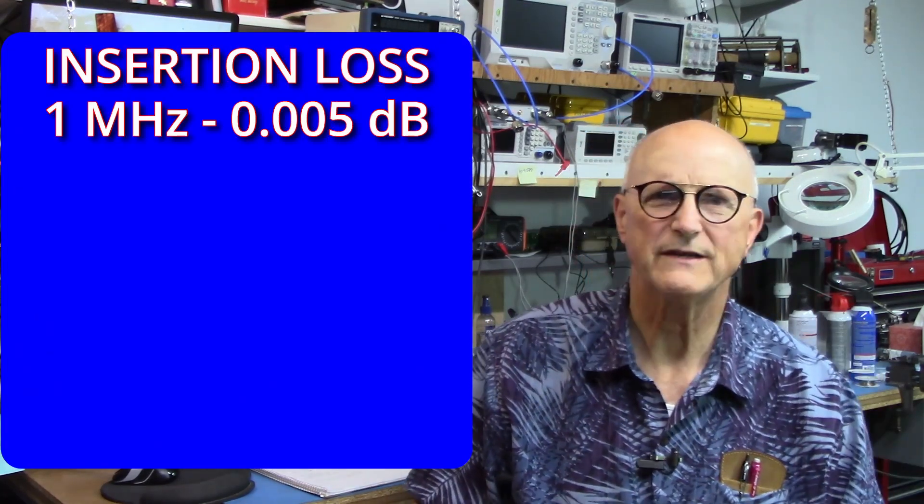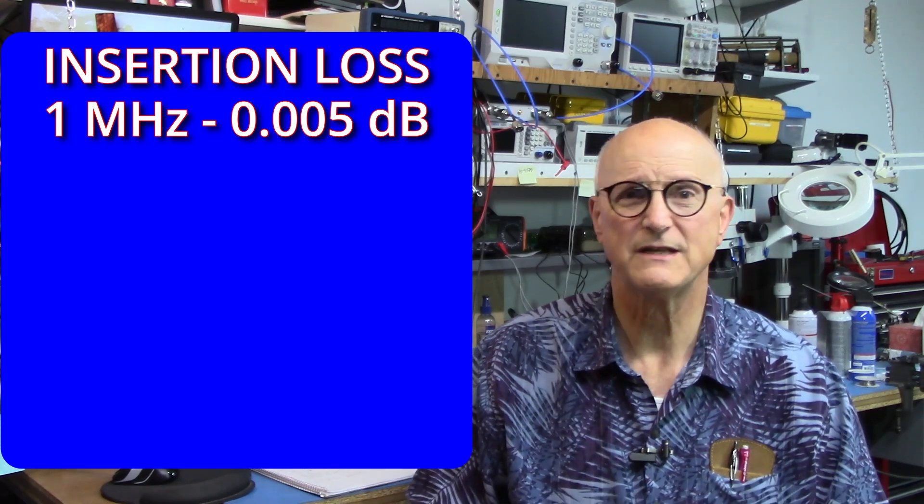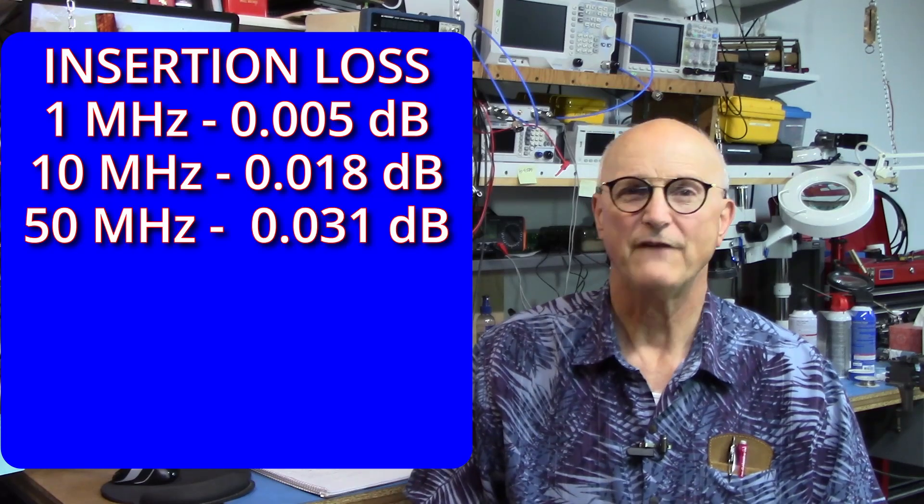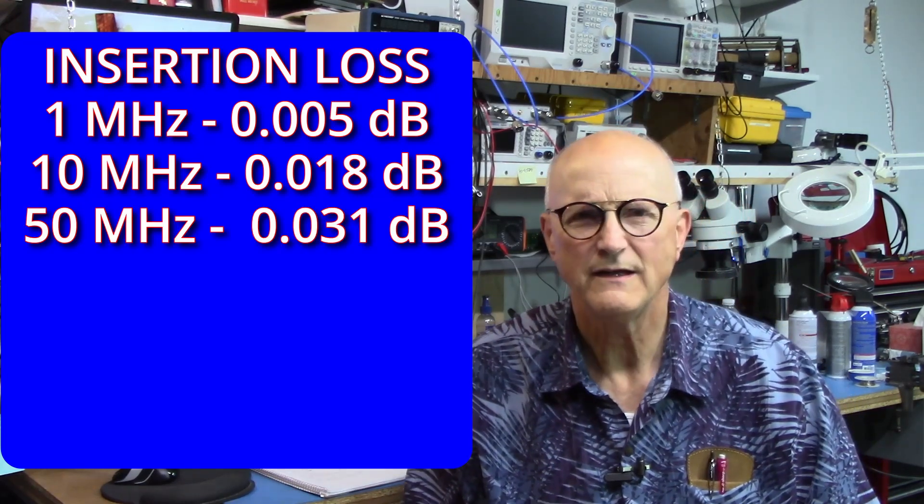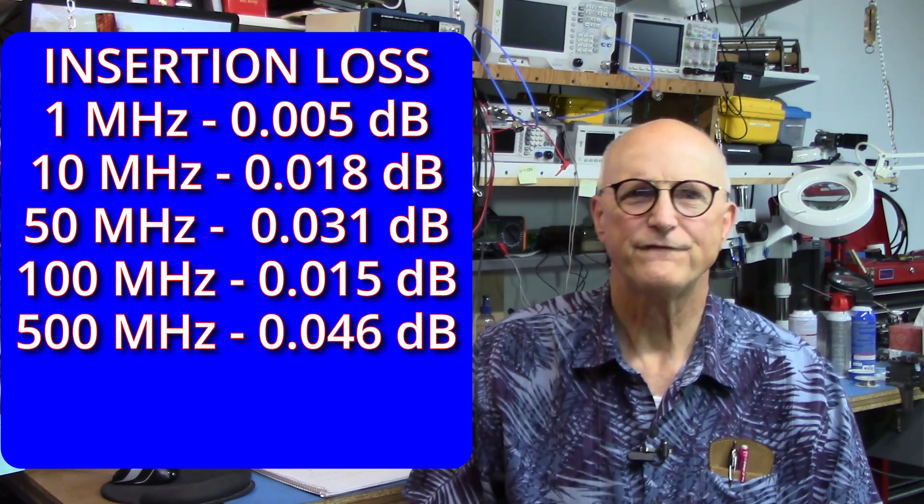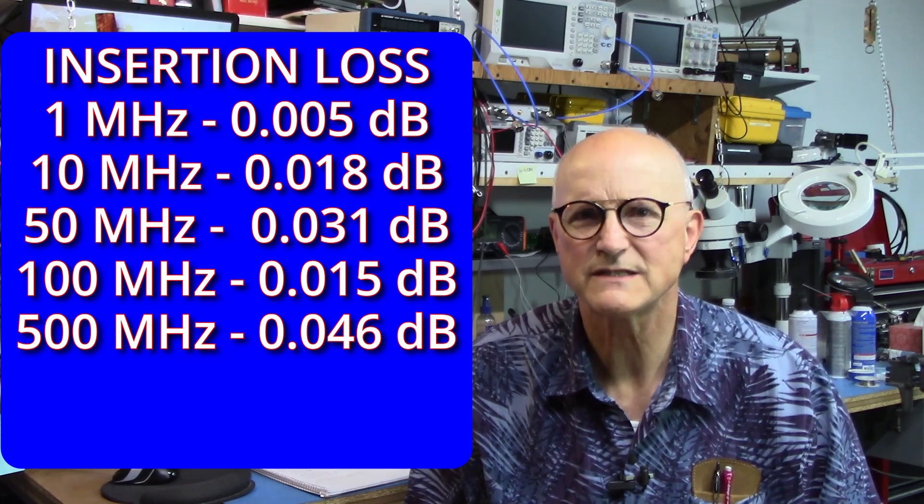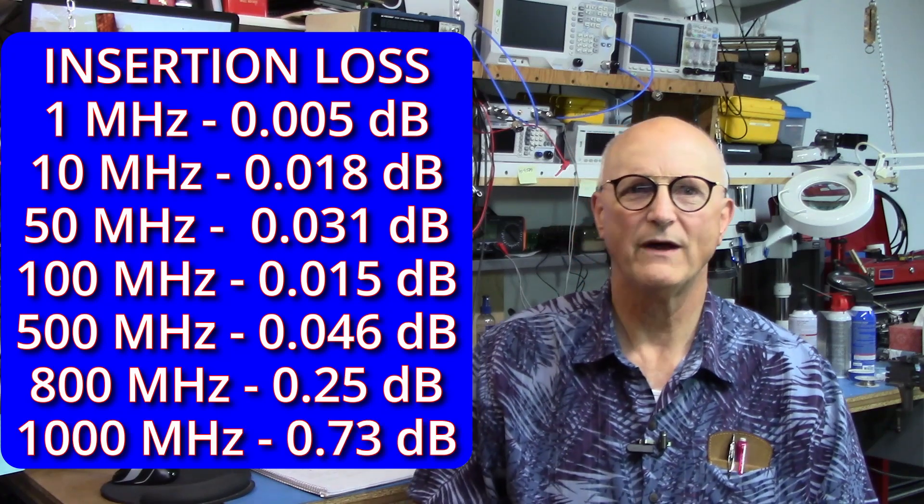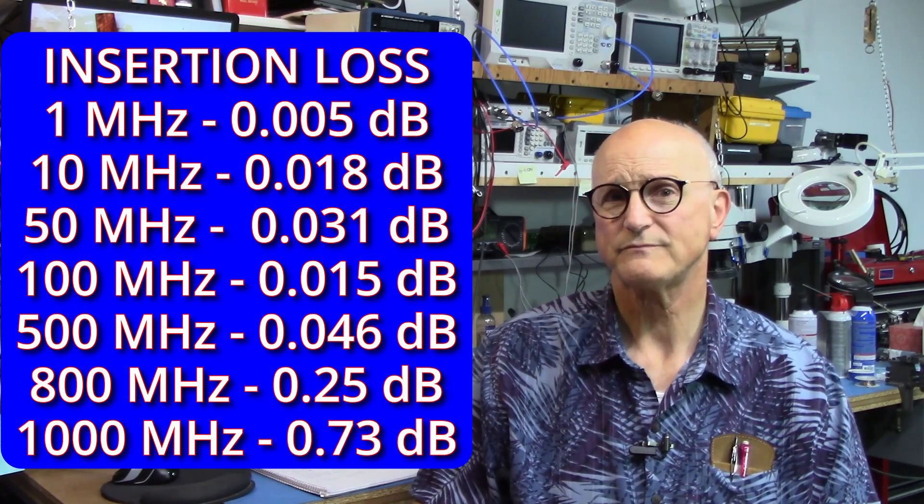At 1 megahertz, it was 0.005 dB. At 10 megahertz, it was 0.018. At 50, it was 0.031. At 100, it was 0.015. At 500, it was 0.046. At 800, it was 0.25. And at 1 gigahertz, it was 0.73. I am below 0.1 dB of insertion loss to 500 megahertz and below 0.75 dB up to 1 gigahertz.